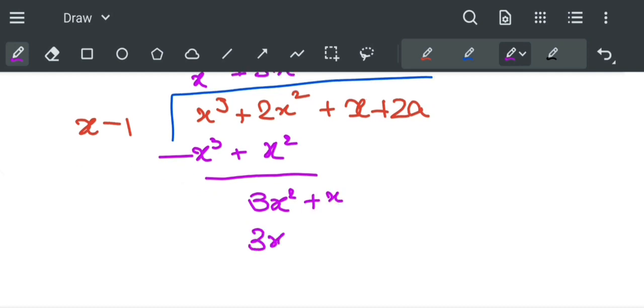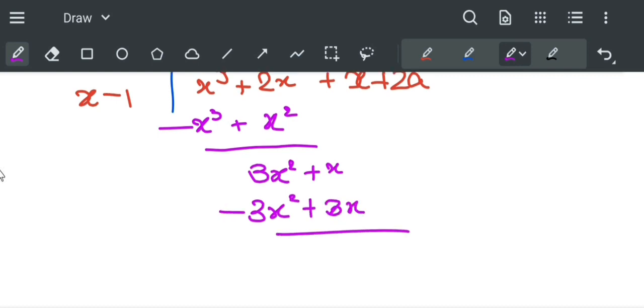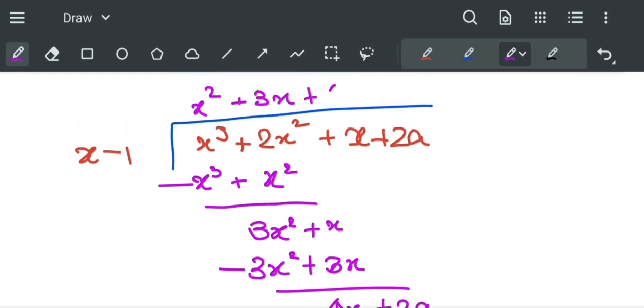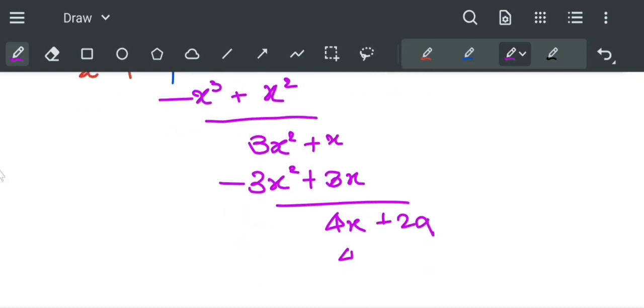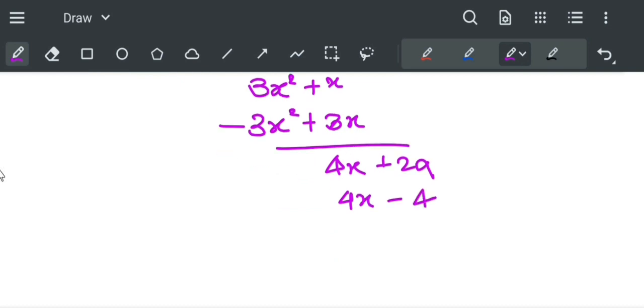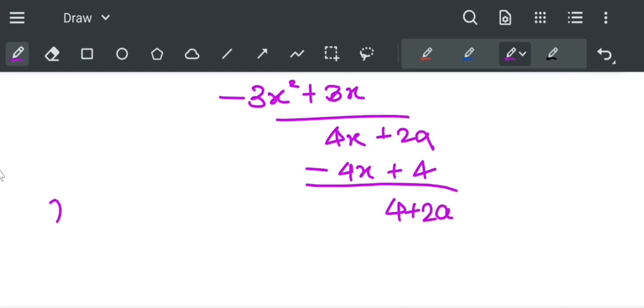x³ minus 3x gives 4x plus 2a. Plus 4 gives 4x minus 4, and on subtracting it gives 4+2a as your second remainder. Let us name it R₂(x) = 4+2a.